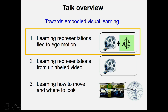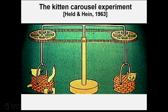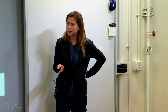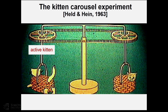Let's look at learning representations tied to ego motion. I'll motivate this with a classic experiment from cognitive science — the kitten carousel experiment. These scientists studied kittens and their visual development from birth. The kittens were in the dark except for about an hour per day on this carousel contraption. One kitten is the active kitten, with control of its own motion in the carousel. The other is a passive kitten who, by construction — notice its paws aren't touching the ground — sees what the active kitten sees, but has no control over where it goes.